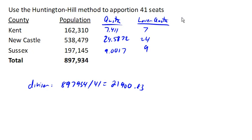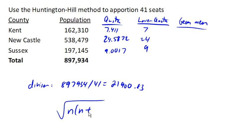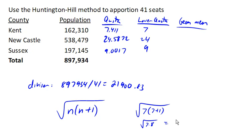Now we're going to find something called the geometric mean. The geometric mean works like this: for any value, the geometric mean is the square root of n times n plus 1 — so it's the square root of a number and one number bigger. For Kent here, we'll have the square root of 7 times 8, which is the square root of 56, which equals 7.4833 — I'll just write 7.48. We compute that for each of these lower quotas.